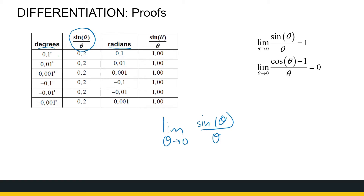I've got a table measuring the ratio sine of theta over theta for different input values of theta in both degrees and radians. If you're using degrees and choosing values that get very close to zero from both sides, you'll see — you can use your calculator — that sine theta divided by theta just hangs around 0.0175. But if we use radians and choose values getting closer and closer to zero from both sides, sine of theta over theta equals one.